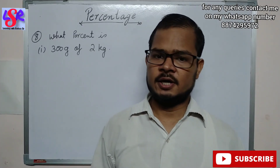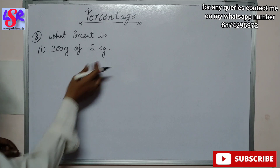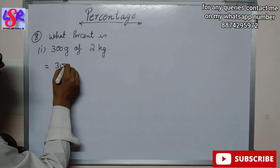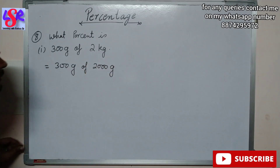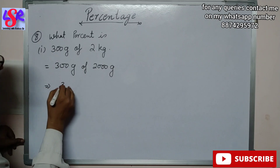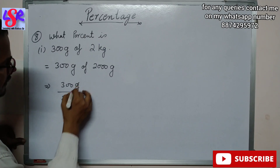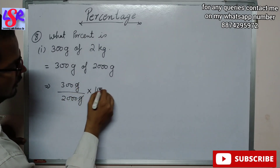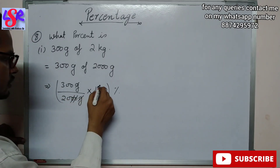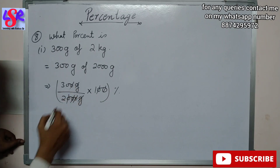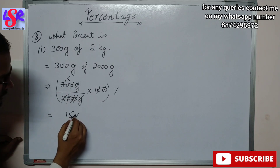Now we have Question 8: what percent is 300 grams of 2 kg? First, we convert 2 kg into grams: 2000 grams. So we write 300 upon 2000 into 100 to find the percentage. The gram units cancel, two zeros cancel with 100, and then further simplification gives 15% as the answer.